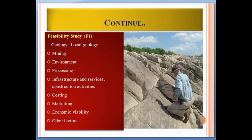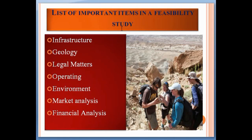The highest feasibility category is F1, the 'feasibility study', which requires geology and local geology, mining environment, processing, infrastructure and services, construction activities, costing, marketing, economic viability, and other factors. Key items in a feasibility study include infrastructure around the ore body, geology of the ore deposit, legal matters such as forest and non-forest land, operating method (open-cast or underground), environmental conditions, market analysis, and financial analysis.